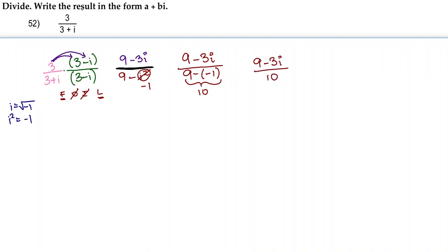Now, they want the result in the form a plus bi. So, we do need to separate this denominator into 9 over 10 minus 3 over 10 i. And that is our final answer.